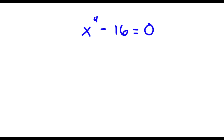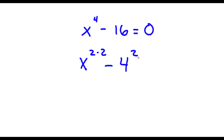Alright, so I have x to the power of 4 minus 16 is equal to zero. Now to start, x to the power of 4 is the same thing as x to the power of 2 times 2, because 4 is 2 times 2, and 16 is the same thing as 4 to the power of 2. So I have x to the power of 2 times 2 minus 4 to the power of 2 is equal to zero.